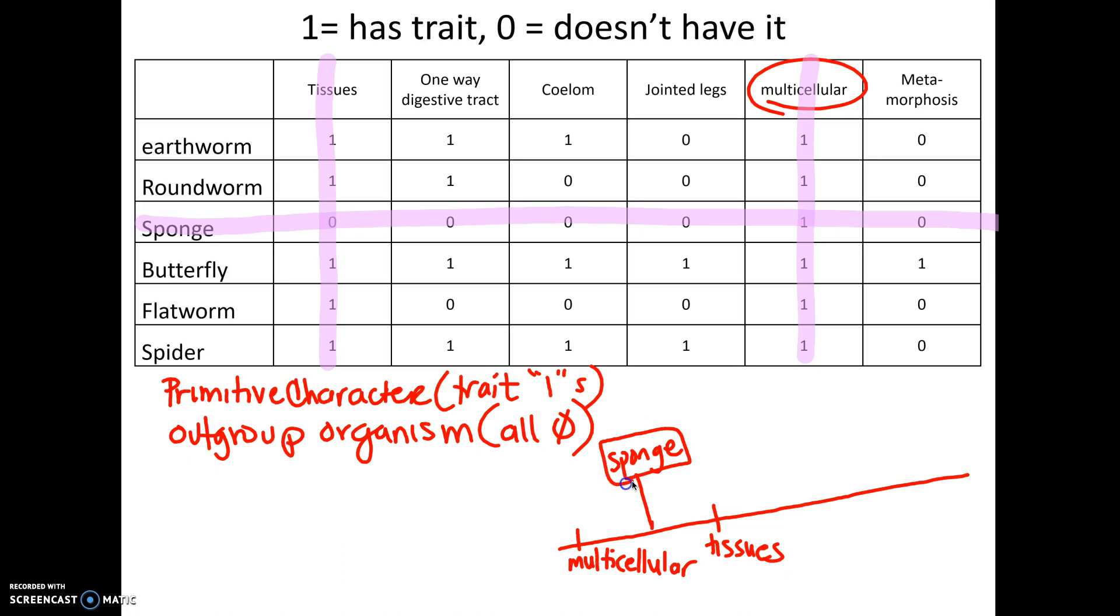All right, now we're going to look for an organism. So we go back and forth. Trait, organism. Is there an organism now that has all zeros once tissues are crossed off? And there is the flatworm. So that's next. Flatworm.